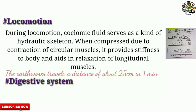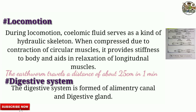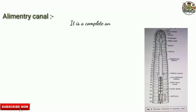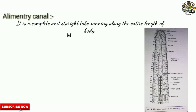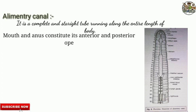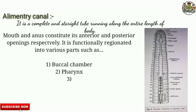Digestive system: The digestive system is formed of the alimentary canal and digestive glands. The alimentary canal is a complete and straight tube running along the entire length of the body. Mouth and anus constitute its anterior and posterior openings respectively. It is functionally divided into various parts: buccal chamber, pharynx, oesophagus, gizzard, stomach, and intestine.